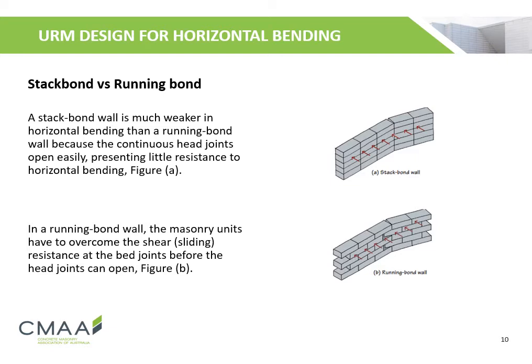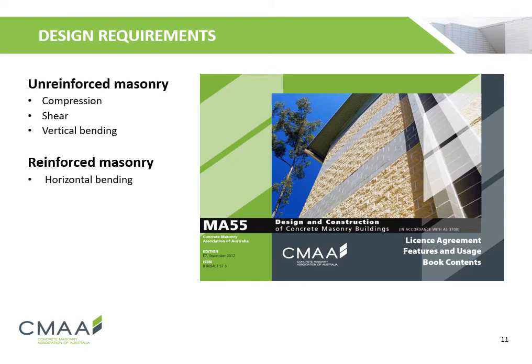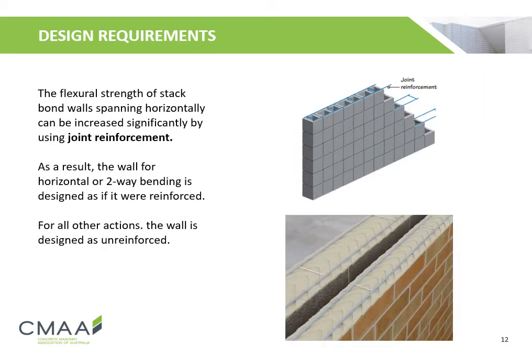In a running bond wall, the masonry units have to overcome the shear resistance at the bed joints before the head joints can open — this is shown in Figure B. Design requirements for unreinforced or reinforced masonry can be found in the CMAA's MA55 manual, available on the website under the technical section. By using joint reinforcement, the flexural strength of stack bonded walls spanning horizontally can be increased significantly. As a result, the wall for horizontal or two-way bending is designed as if it were reinforced, while for all other actions the wall is designed as unreinforced.